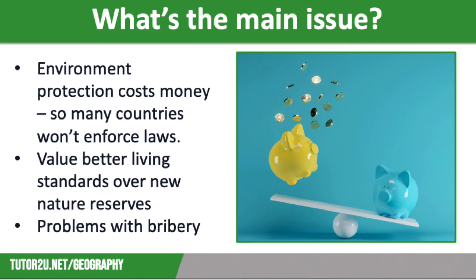So why do governments struggle to protect their valuable ecosystems? As usual, it comes down to money. Very few governments are willing to do anything that might slow down the rate of economic development within their country, and environmental protection costs money. As a result, many governments won't enforce or monitor laws aimed at protecting or conserving tropical rainforests. Additionally, many people living in developing nations would rather have better living standards than new nature reserves. And to top it off, corruption often gets in the way of tropical rainforest management — for example, where illegal loggers and developers pay bribes to government officials in order for them to turn a blind eye to their exploitation.